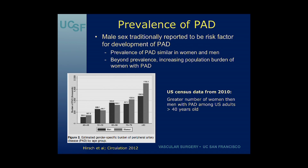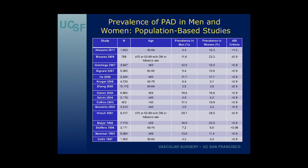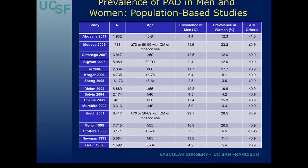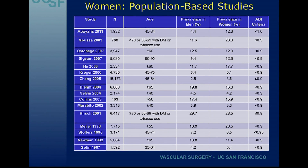I think this is pretty surprising because it's not widely recognized. This is a table we compiled looking at those population-based studies that did report separate prevalence rates for men and women. Most of them used an ABI of less than 0.9, and as you can see from this table, the prevalence rates of PAD are actually equal, if not slightly greater, in women compared to men.